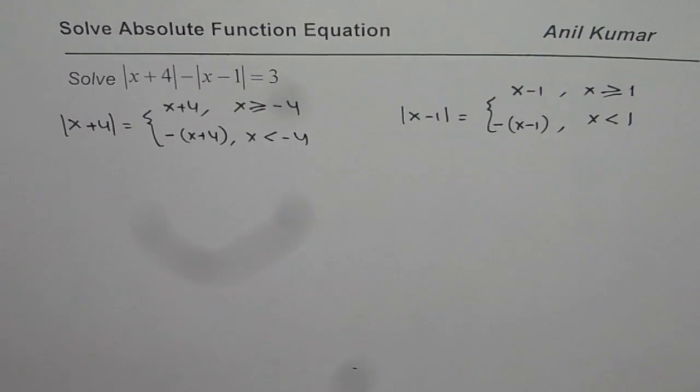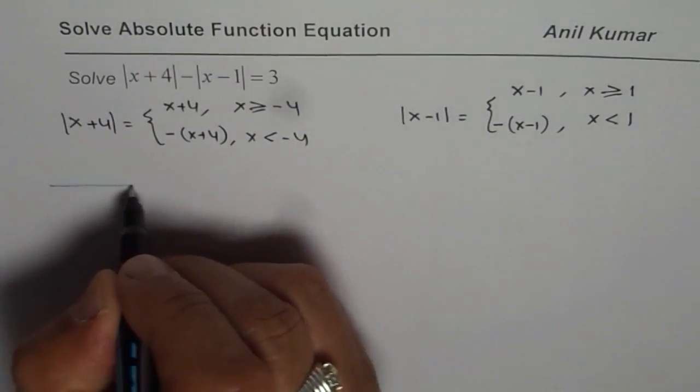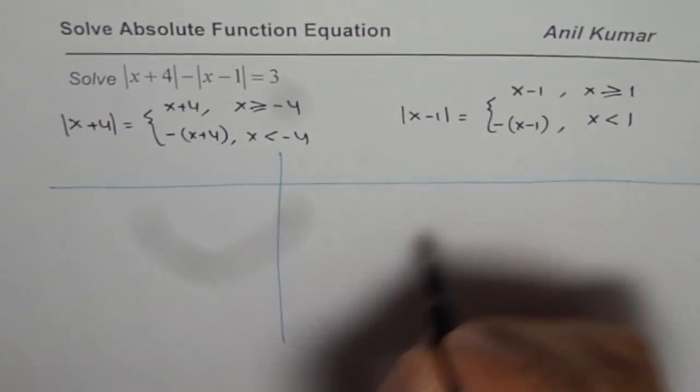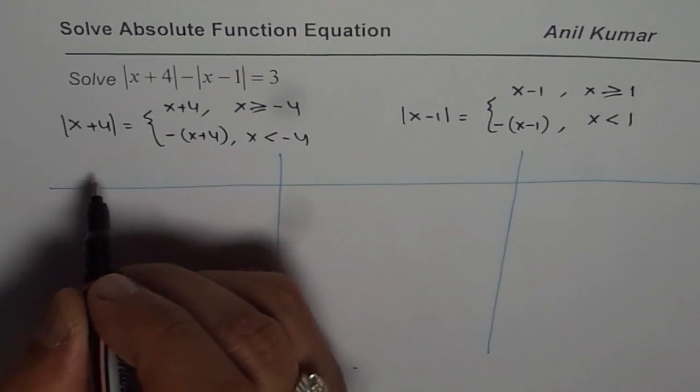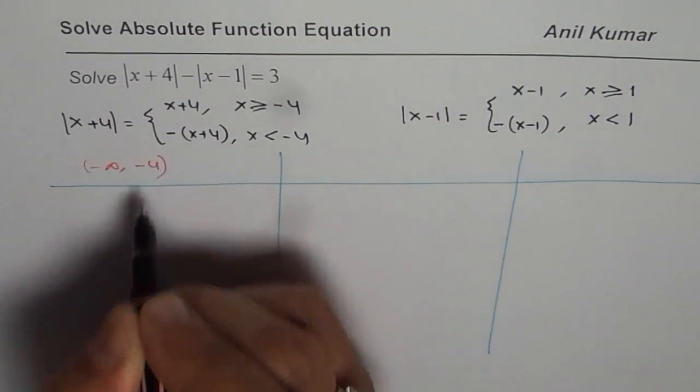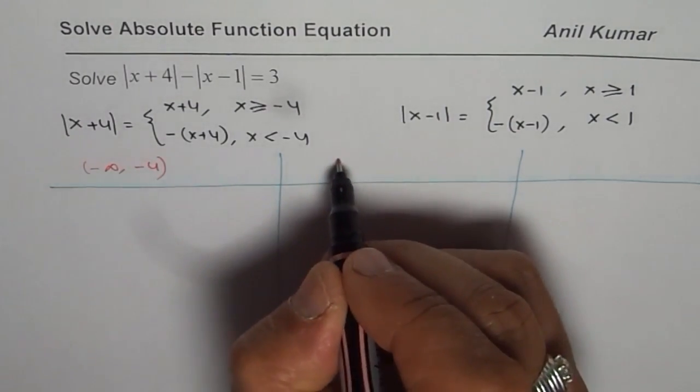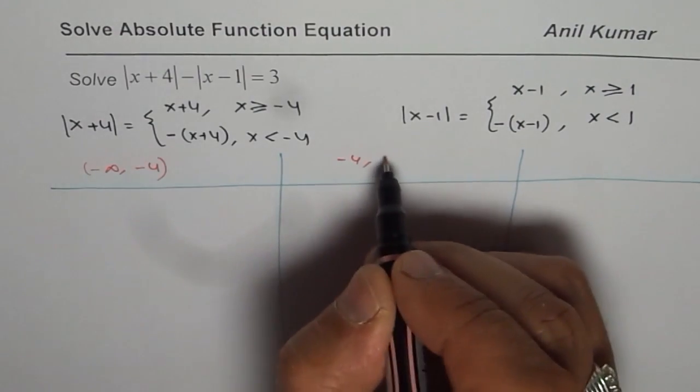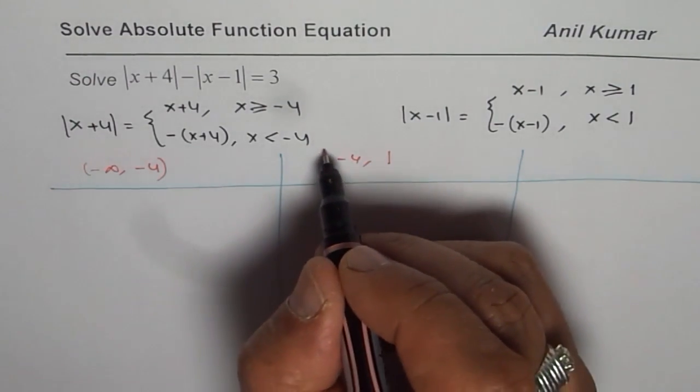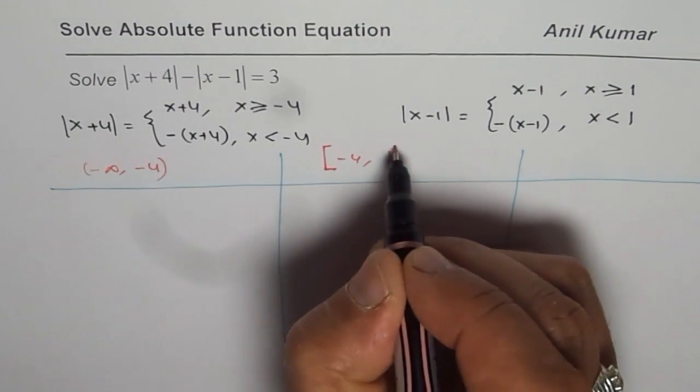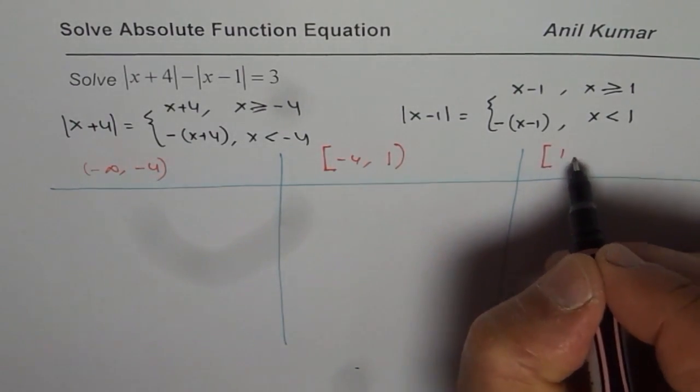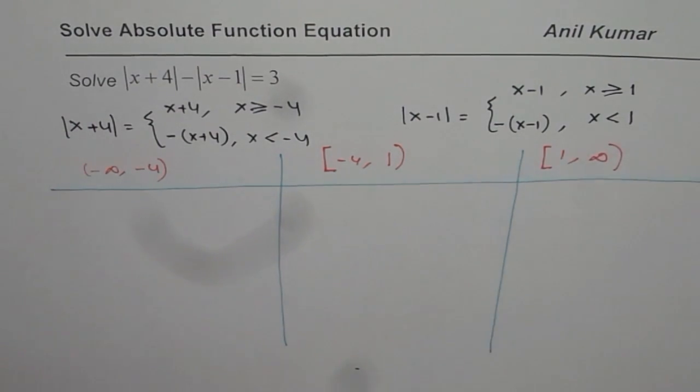That tells you we have to solve this equation in three different intervals. The first is from negative infinity to -4. The second interval is from -4 to 1, and the third is from 1 to infinity.